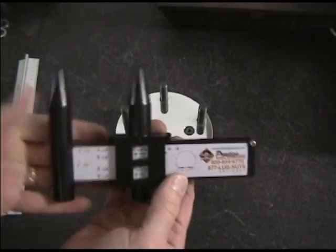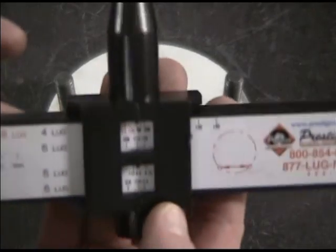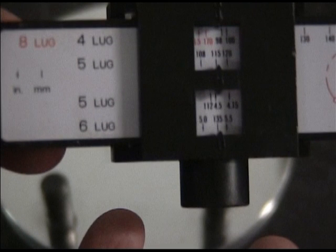That's the best solution for finding a bolt circle on a wheel, is to take this and read it directly. Otherwise, you're really guessing when you do that.